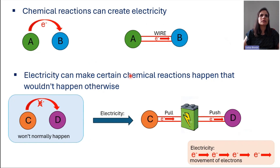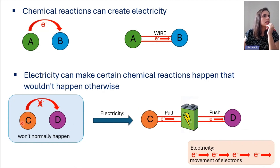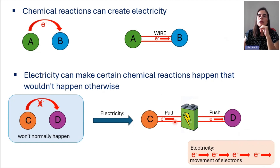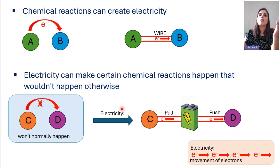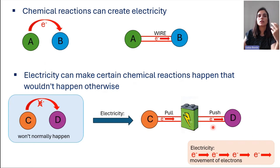But how can electricity make certain chemical reactions happen that wouldn't happen otherwise? If I do the same, but now I connect element C with element D, and this is not thermodynamically favorable — C would normally not send electrons to D — then I use electricity. I put a battery here in the middle. The battery is able to pull electrons from C and send these electrons to D. So now I am creating some chemical reactions using electricity that would not happen on their own. C is not C anymore and D is not D anymore — they have one electron less and one electron more because we use electricity.